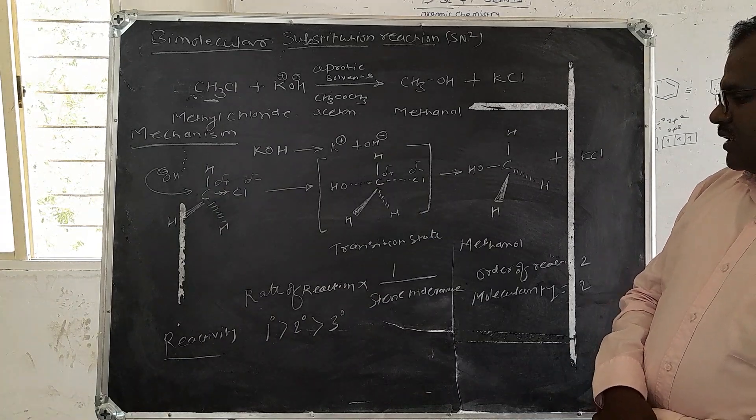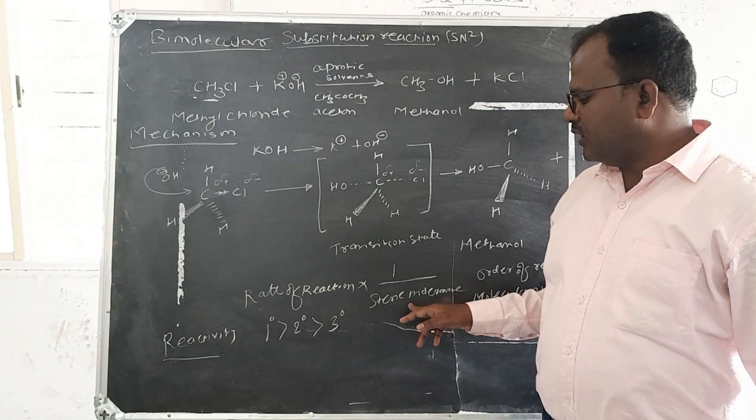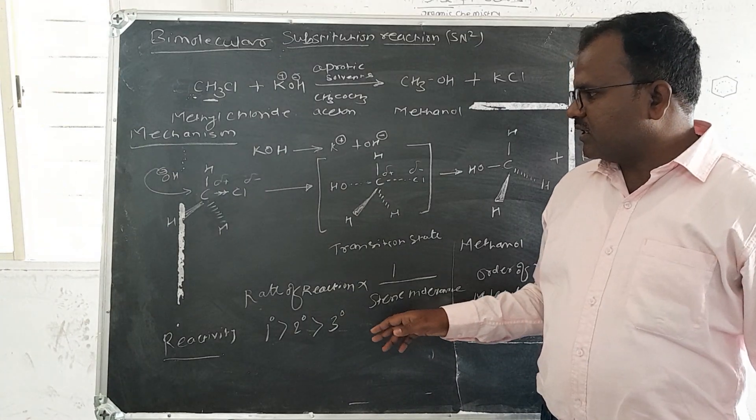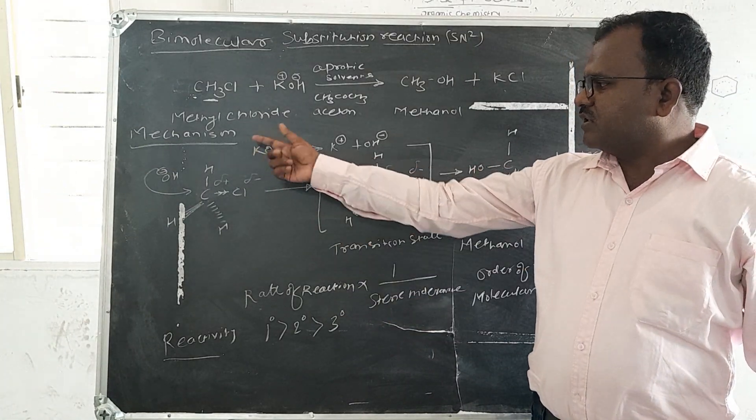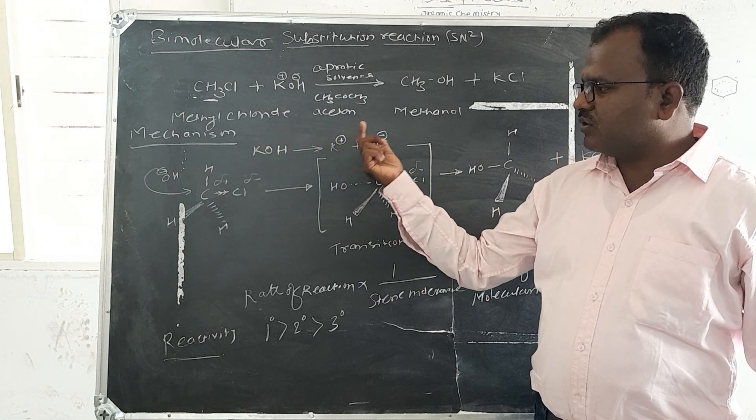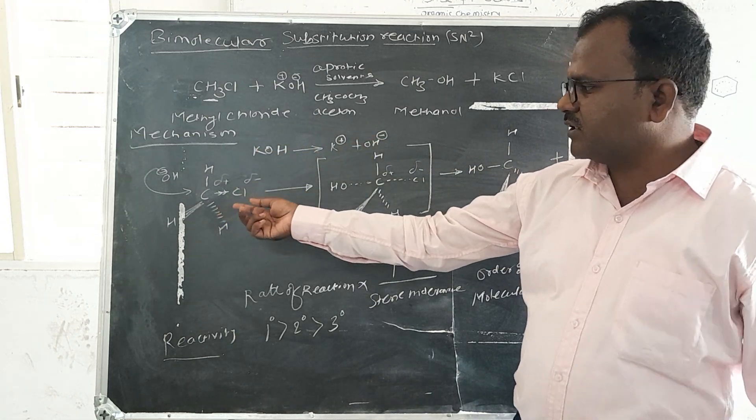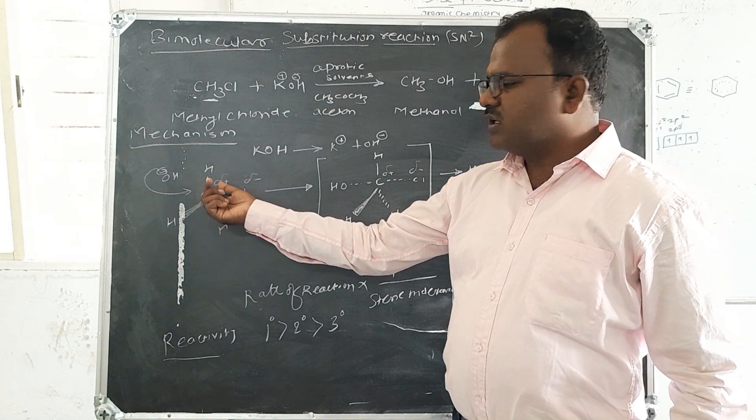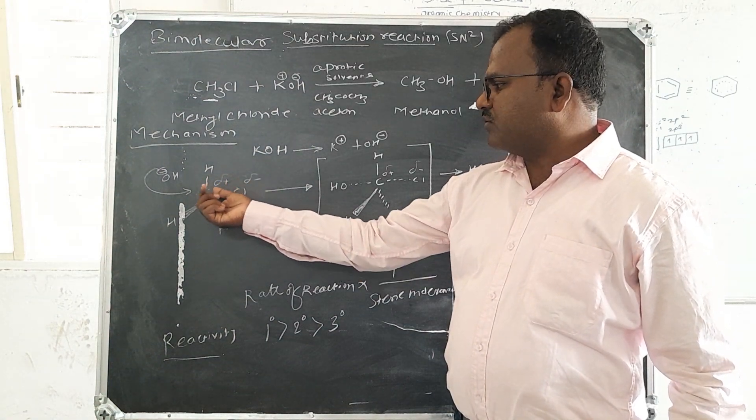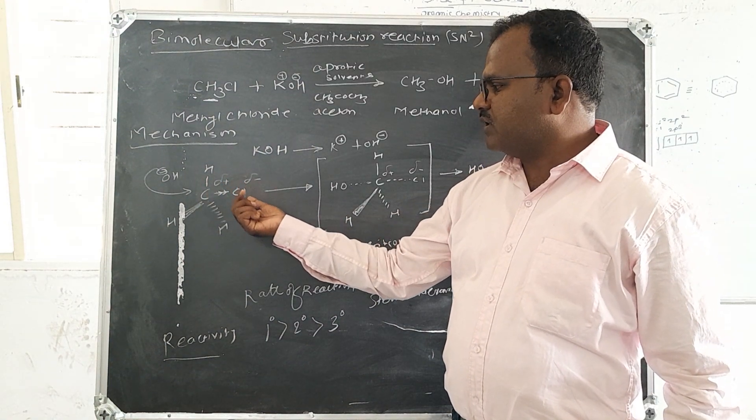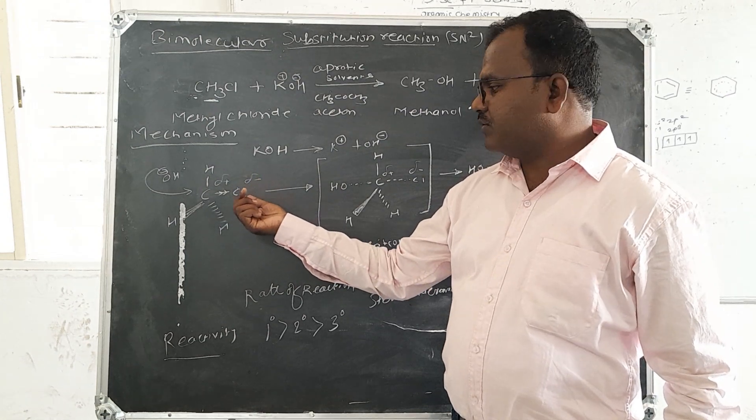The rate of reaction is inversely proportional to the steric hindrance. The mechanism of this reaction: Here formation of nucleophile, and this nucleophile is attached to this carbon atom. Here the partial positive charge forms, and the chloride forms the partial negative charge. The chloride, chlorine atom having more electronegativity compared to the carbon atom.